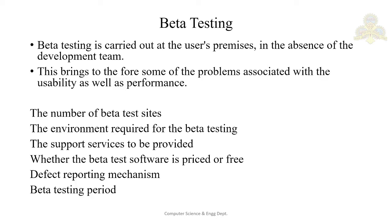The first aspect is the number of beta test sites, which depends on the type of product. For a generic product released to the market at a large scale, a large number of test sites are required to test the software under different environments — different operating systems and users with different cultural backgrounds. For example, for Windows 95 there were about 400,000 beta test sites. Sometimes limited beta testing starts with a small number of sites and more are added later.